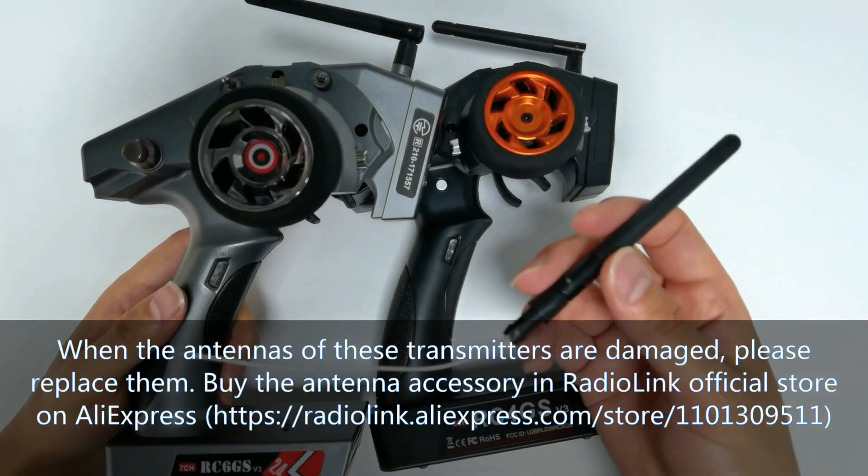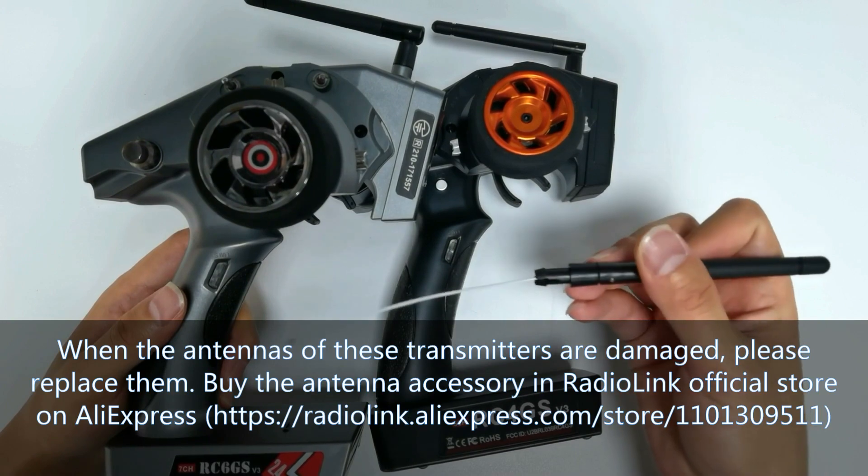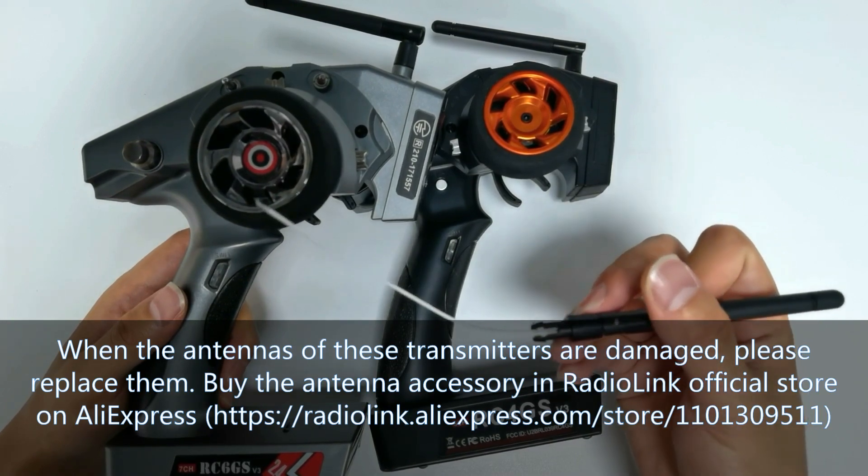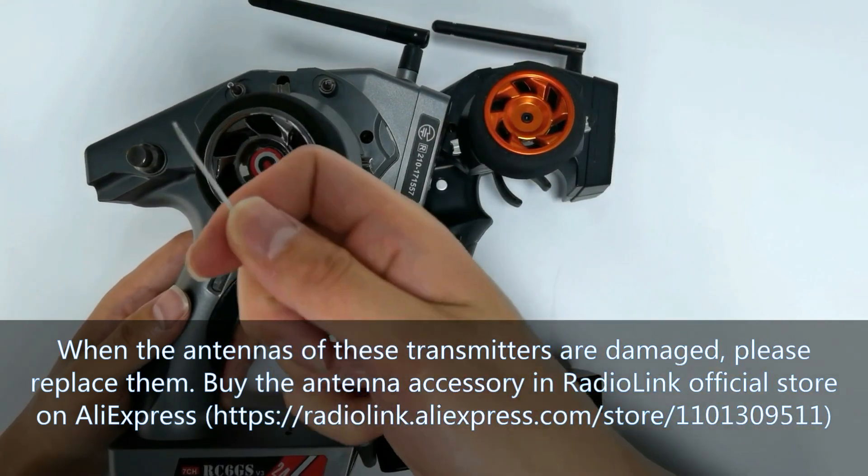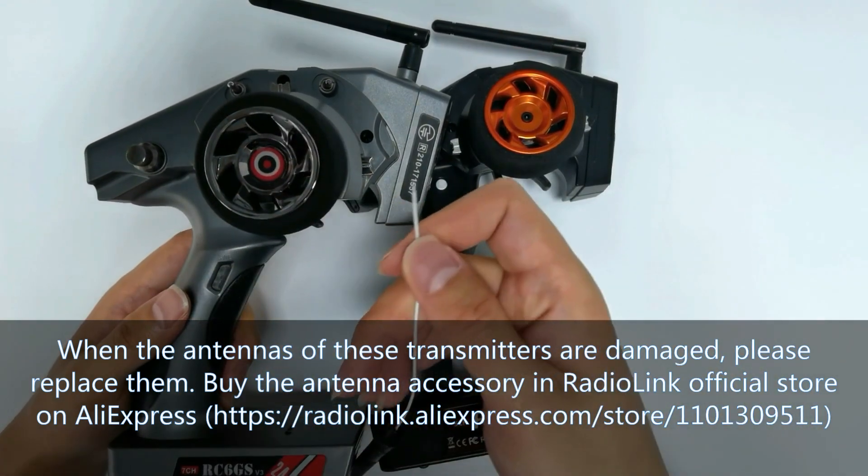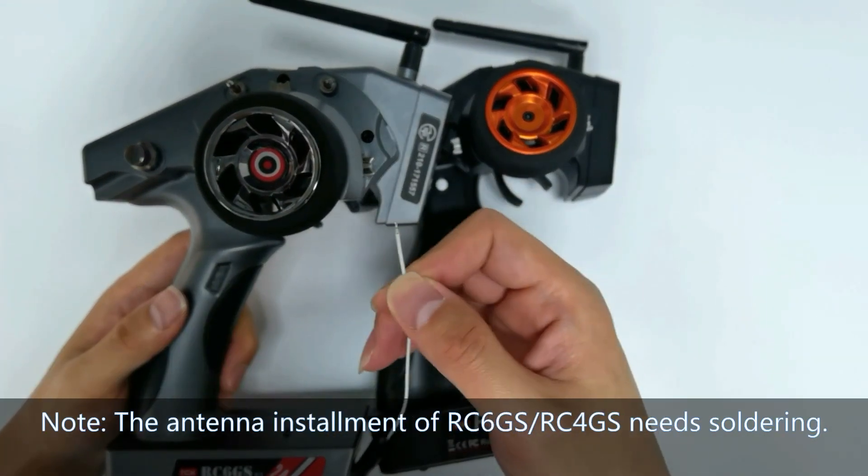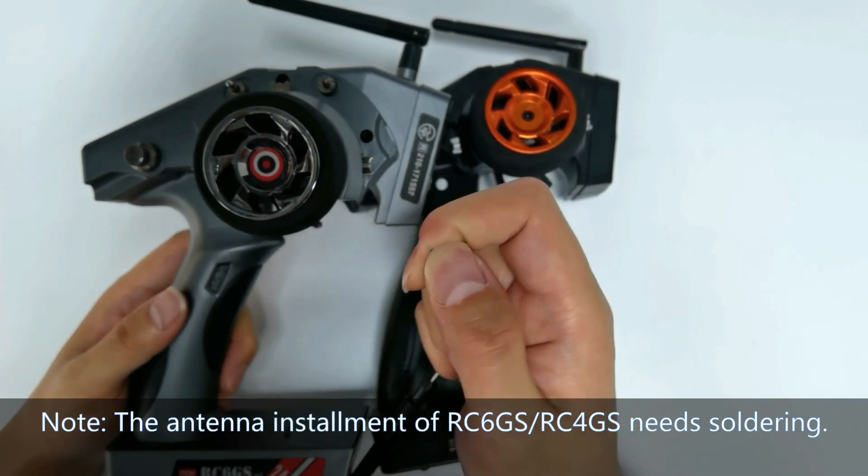When the antennas of these transmitters are damaged, please replace them. Buy the antenna accessory from the Redlink official store on Aliexpress. And please note the antenna of RC6GS or RC4GS needs soldering.